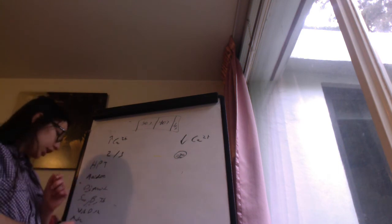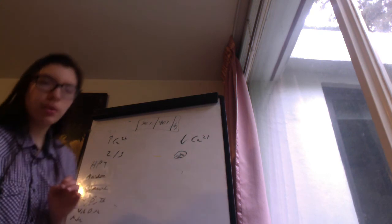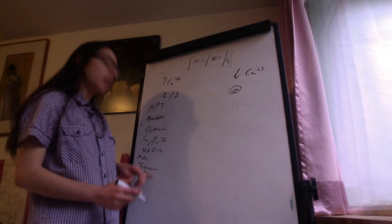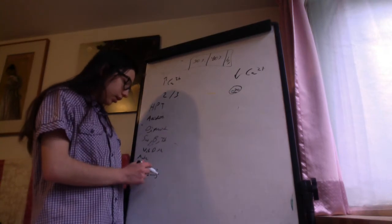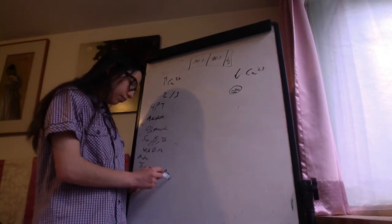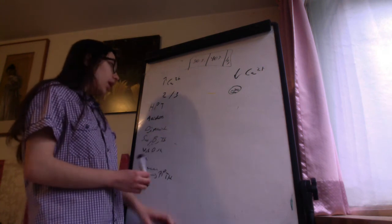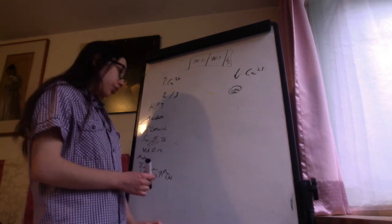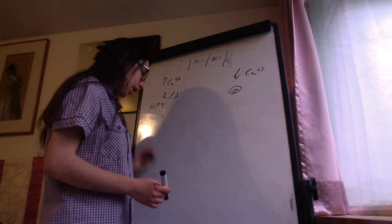Nutritionally, mildly decreased magnesium leads to increasing PTH, which then leads to increasing calcium. Hyperparathyroidism is divided into primary, secondary, or tertiary.